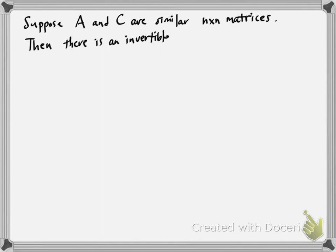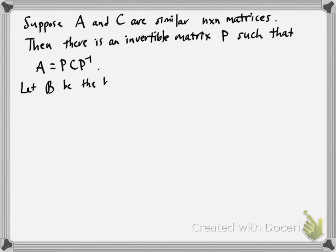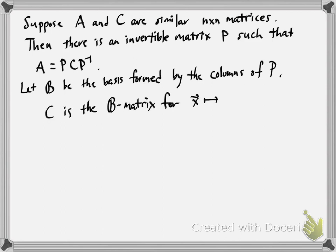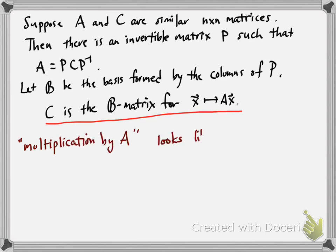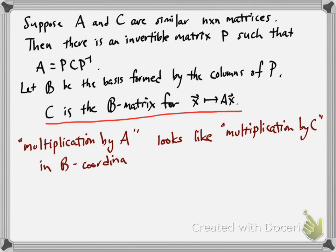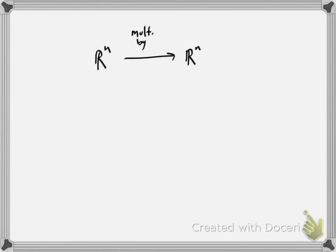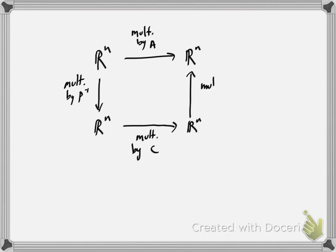Suppose A and C are two square n by n similar matrices, meaning there's an invertible matrix P such that A equals PCP inverse. Let B be the basis formed by the columns of P. Then C is the B matrix for the linear transformation X goes to A times X. So multiplication by A looks like multiplication by C, as long as you're using B coordinates. Our vector spaces are Rn and Rn, and multiplication by A defines the linear transformation.